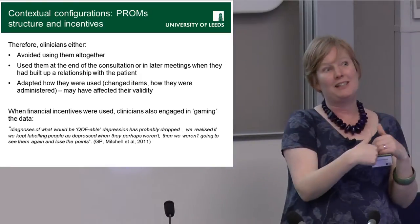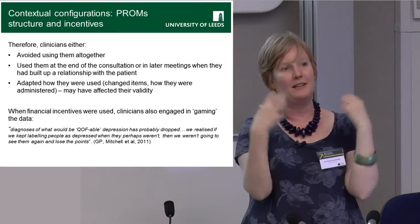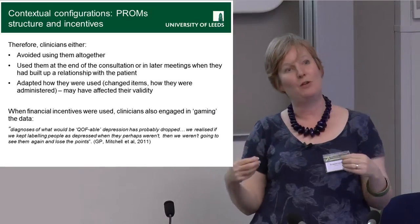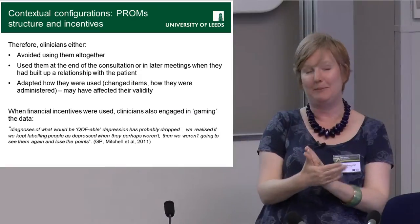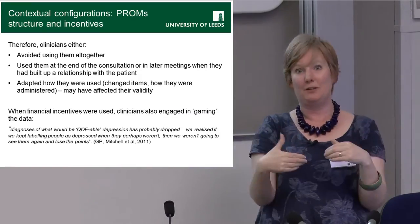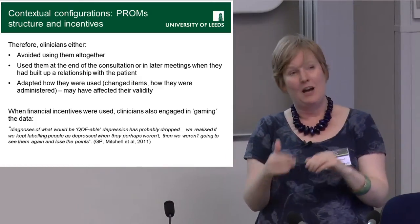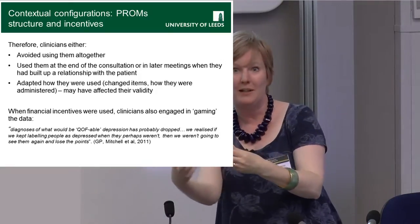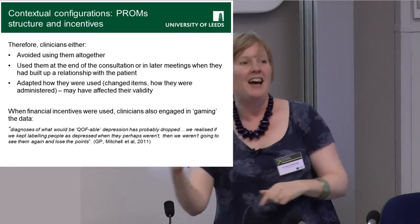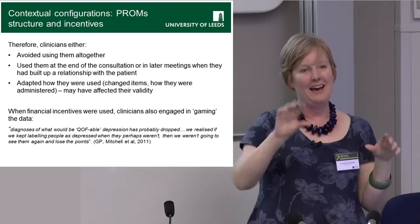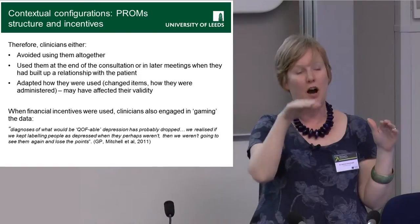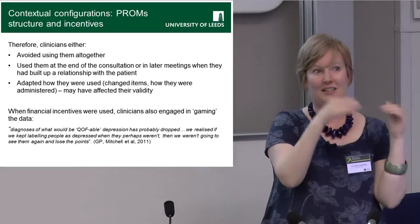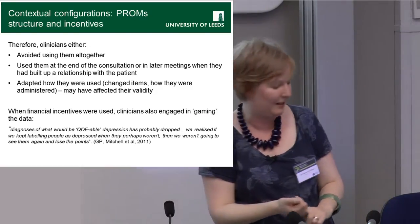When financial incentives were present — as in the Quality and Outcomes Framework in general practice — clinicians engaged in what we might call gaming. To avoid losing QOF points without wanting to use the questionnaires, they stopped coding people as having depression. If you don't code someone as depressed, they don't fall into the QOF target, so you don't lose points for not using the questionnaires. The qualitative evidence suggests that as a result, estimates of prevalence of depression artificially went down.